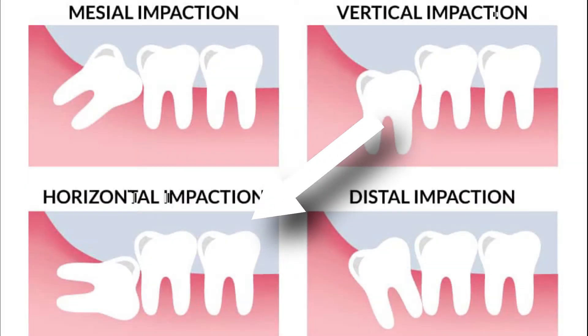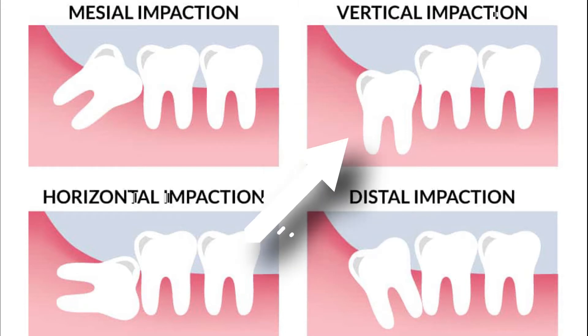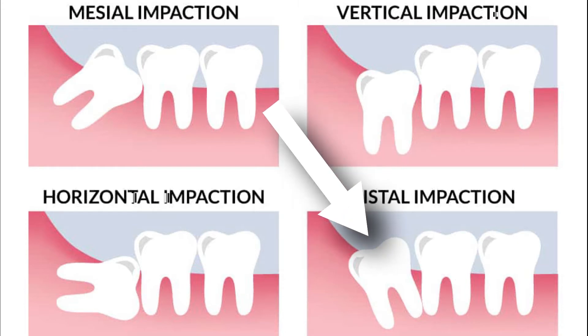The types of impactions include horizontal impaction, mesioangular impaction, vertical impaction, and distoangular impaction. Wisdom teeth don't always need to be removed if they are asymptomatic. This is because there's no proven benefit of doing this and it carries the risk of nerve complication.